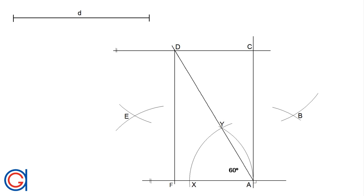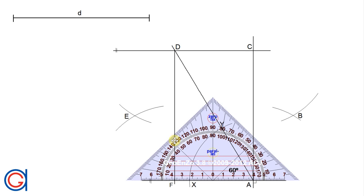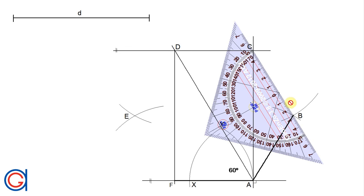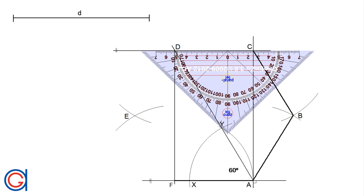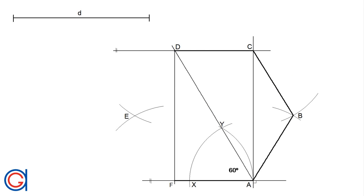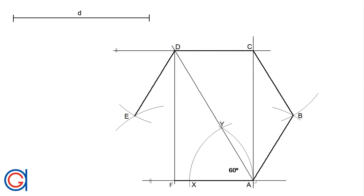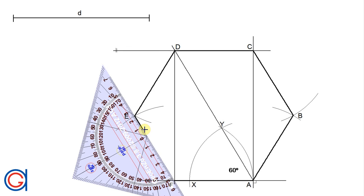The final step: with a thicker pencil, we join all of the vertices. From F to A, from A to B, from B to C, from C to D, from D to E, and finally we close out our hexagon joining vertex E back to F.